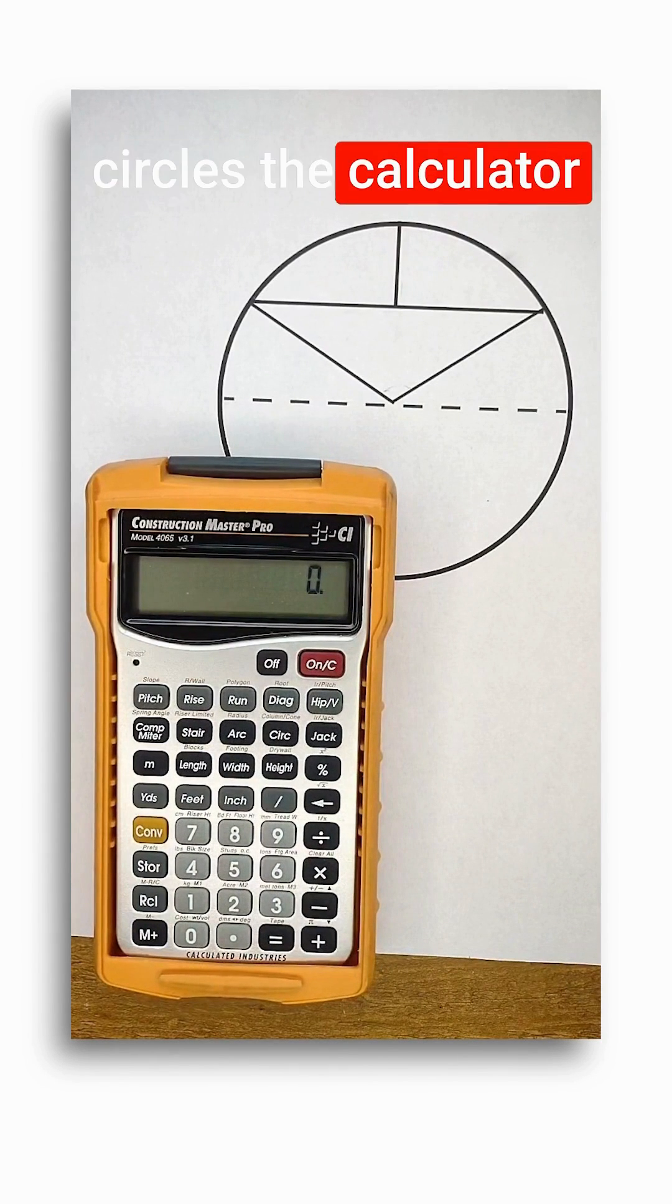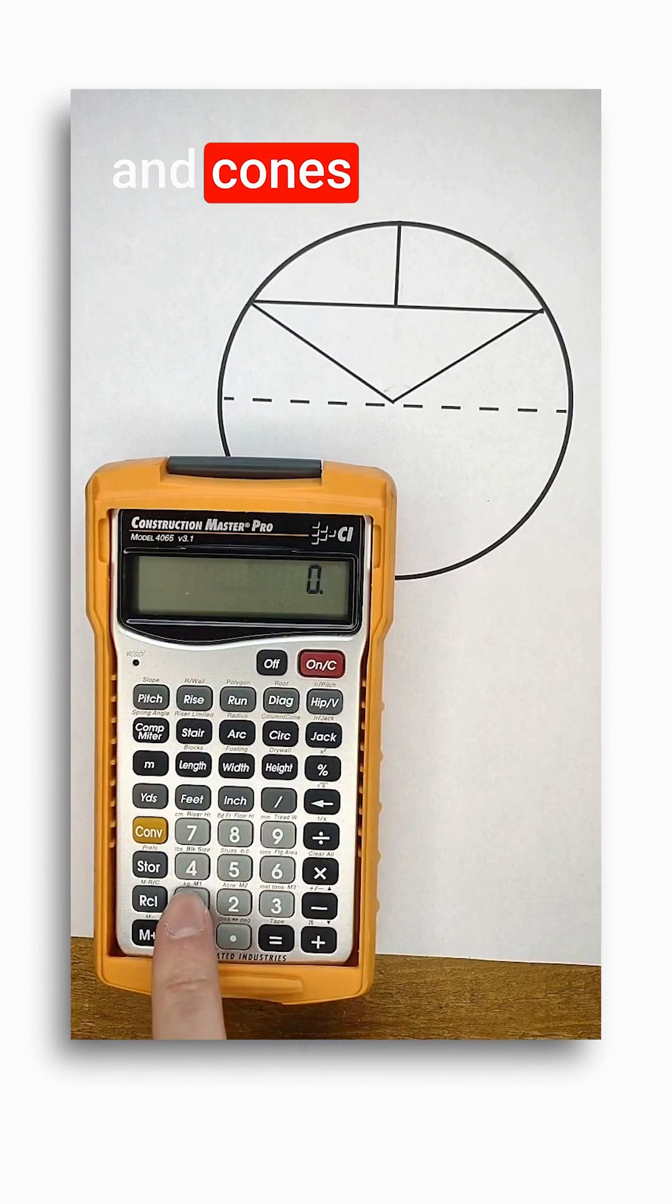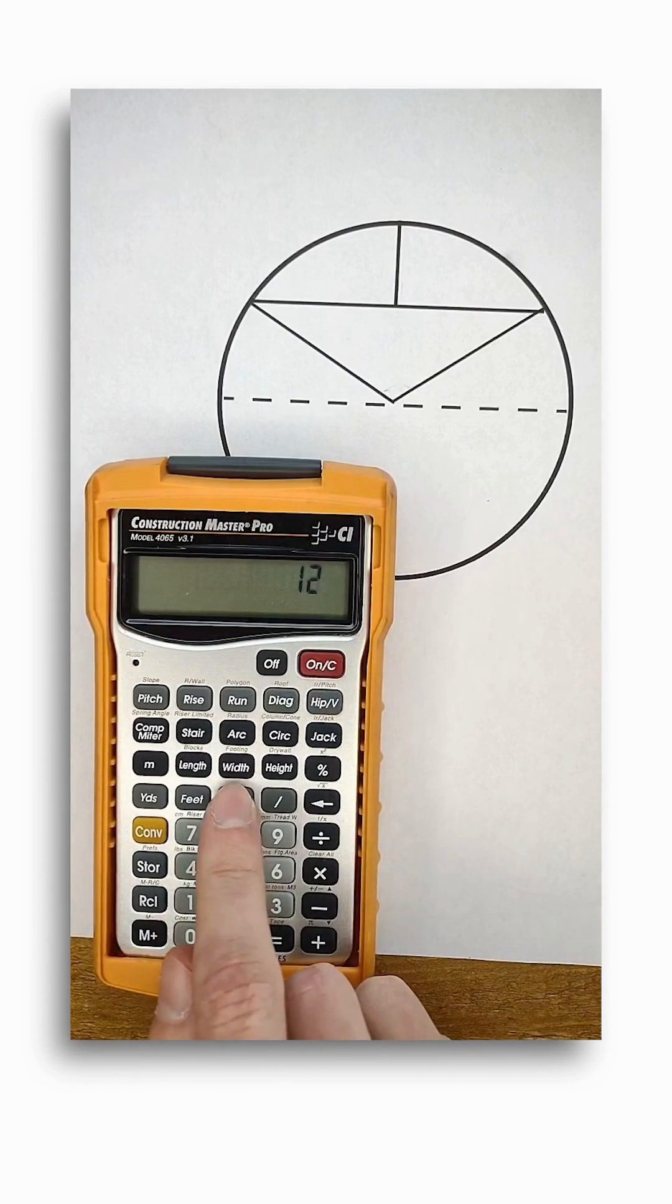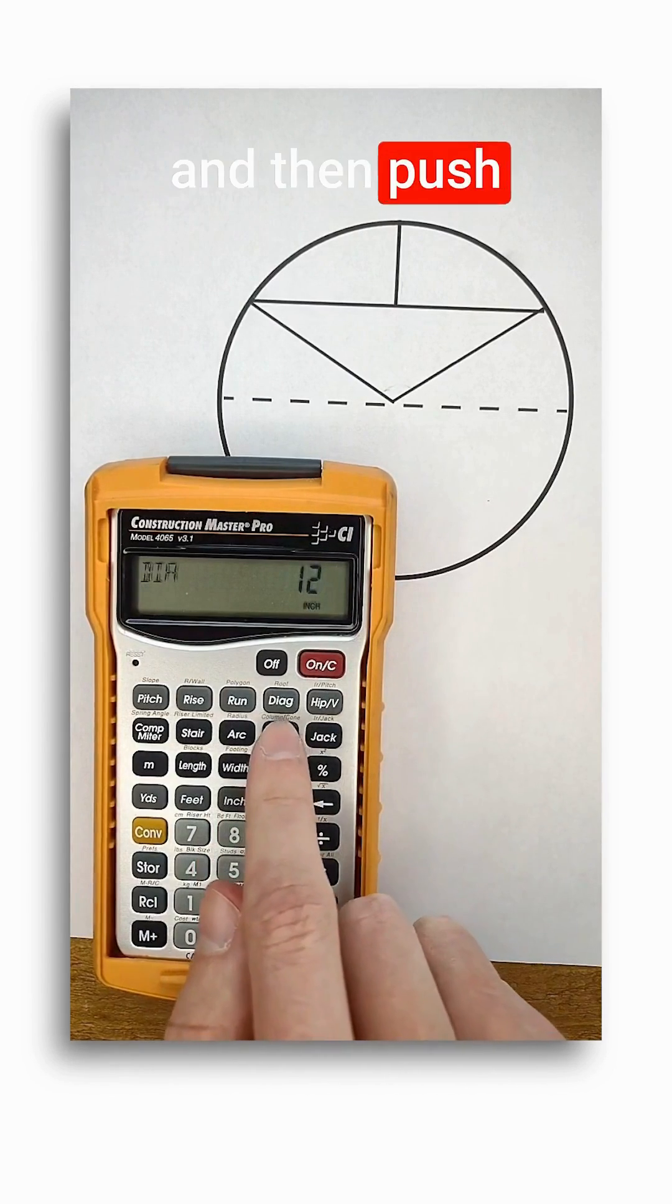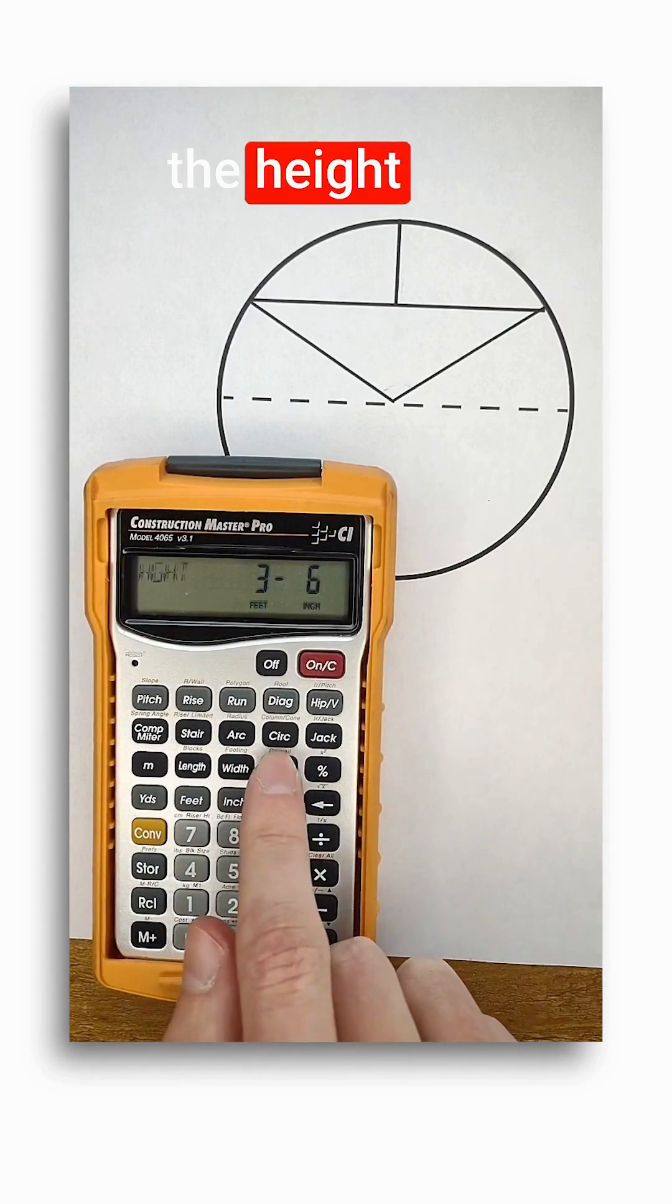The last aspect of circles the calculator can understand is 3D shapes like columns and cones. For both of those, first I need to enter the diameter and then push the circle button. Next I need to enter the height and push the height key.